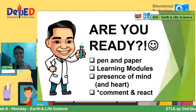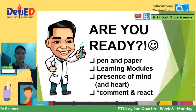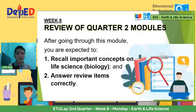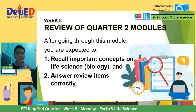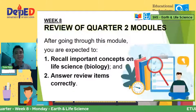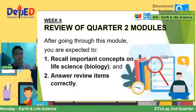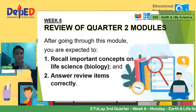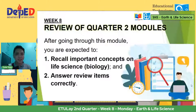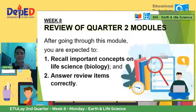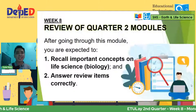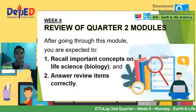For week eight, this is review of quarter two modules. After going through this module, we're expected to: number one, recall important concepts on life science or biology for the second quarter of Earth and Life Science; and number two, answer review items correctly. I'll help you answer the items correctly, but you have to be engaging and interact with me via the comment section.